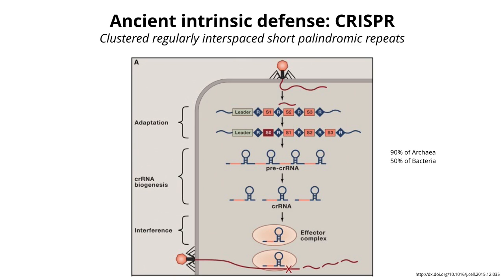CRISPR is in the news because people have adapted this system to modify genes in mammalian cells—you can modify any gene by making a short sequence, combining it with an effector protein, putting it into a cell, and chopping, fixing, or excising it. One application is treating retinopathy by editing patients' cells using CRISPR and restoring eyesight. Controversy arises when trying to modify germ cells—making heritable changes in humans. Mark my words: there will be a Nobel Prize for this in the next five years.